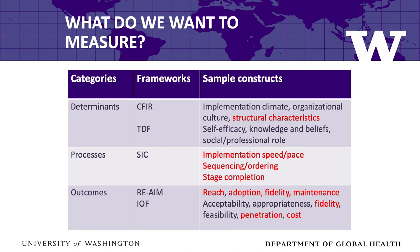In implementation science, the constructs that interest us fall into three categories: determinants, processes, and outcomes. I've listed here some conceptual frameworks commonly used to get at these three categories. The SIC is the Stages of Implementation Completion, which might not be as familiar as the Consolidated Framework for Implementation Research or RE-AIM, but it is one of the few frameworks and measures we have in the field for assessing the process of implementation.